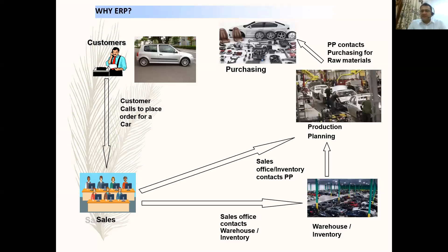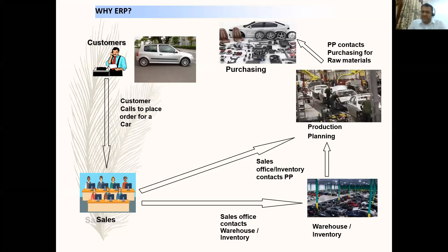On the other hand, if the demand is a thousand cars but the inventory and production department gets the information that they need to manufacture 1 lakh cars, then there is nobody to buy that. So this information sharing is very important, and that is the backbone of the ERP.